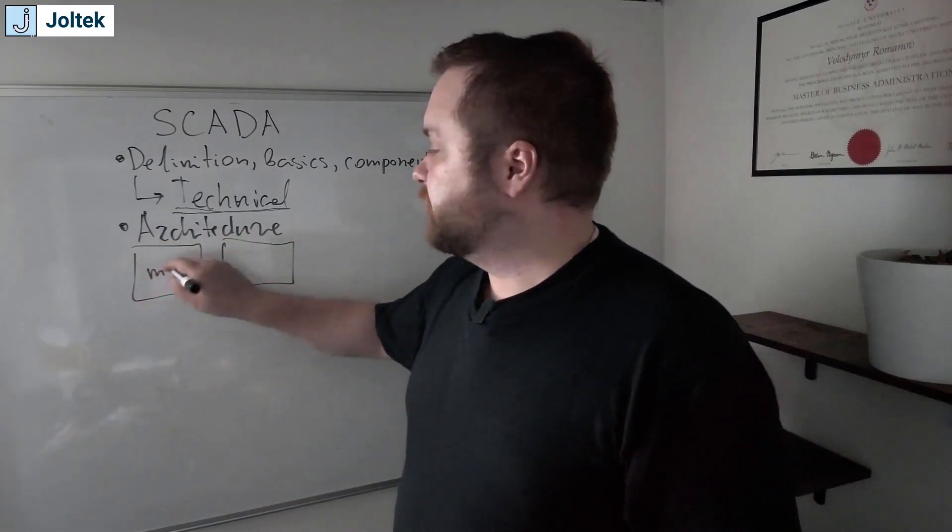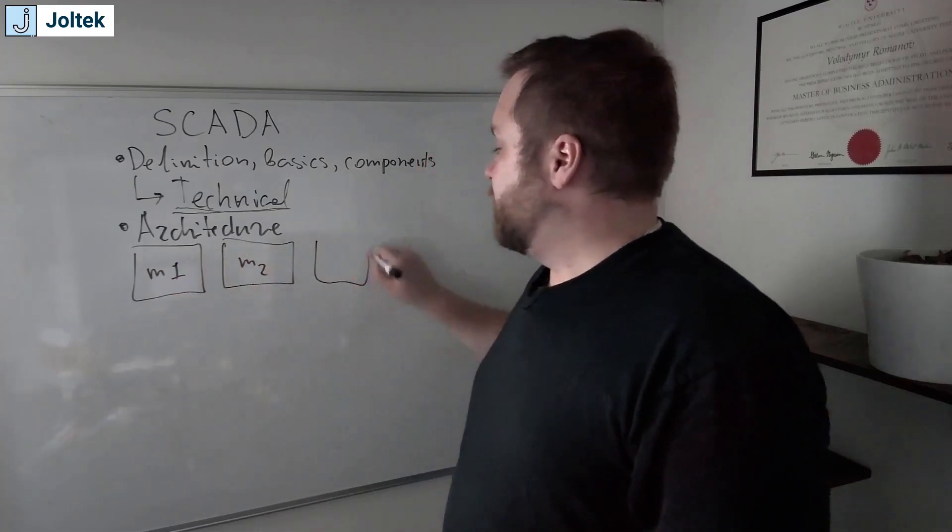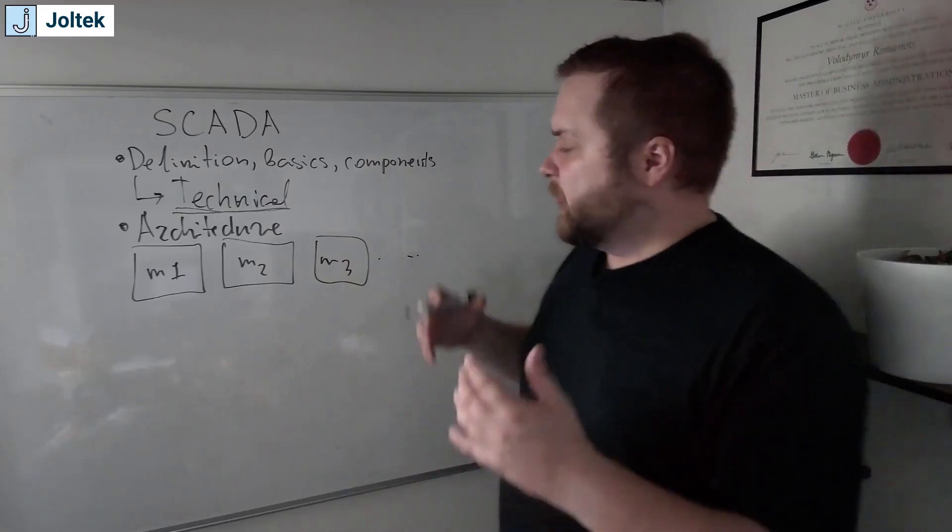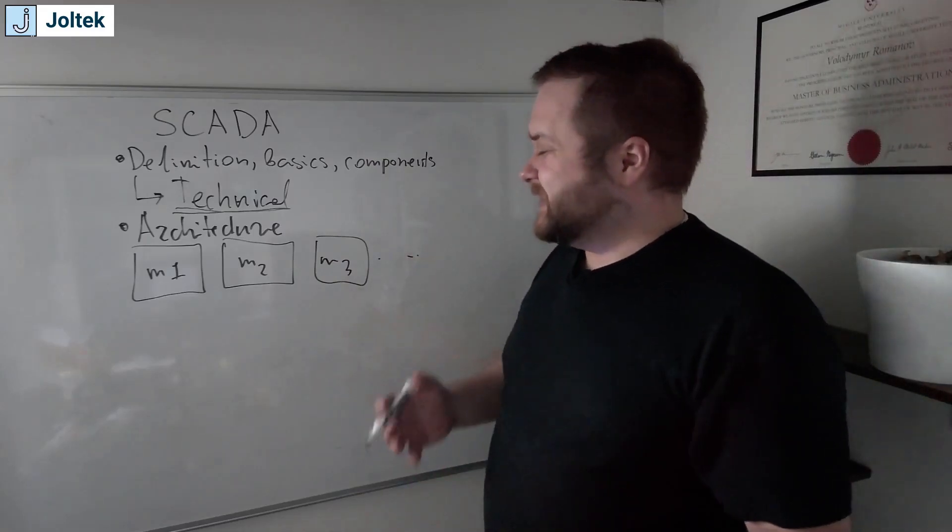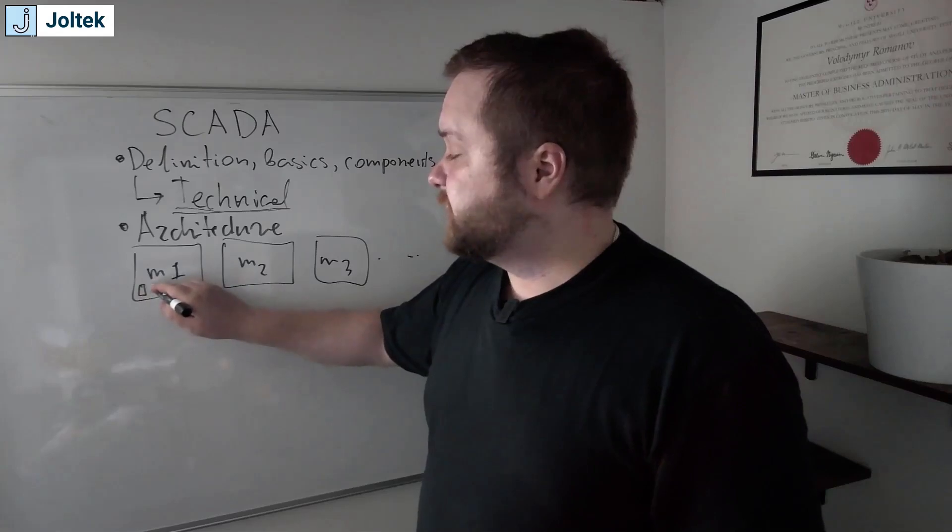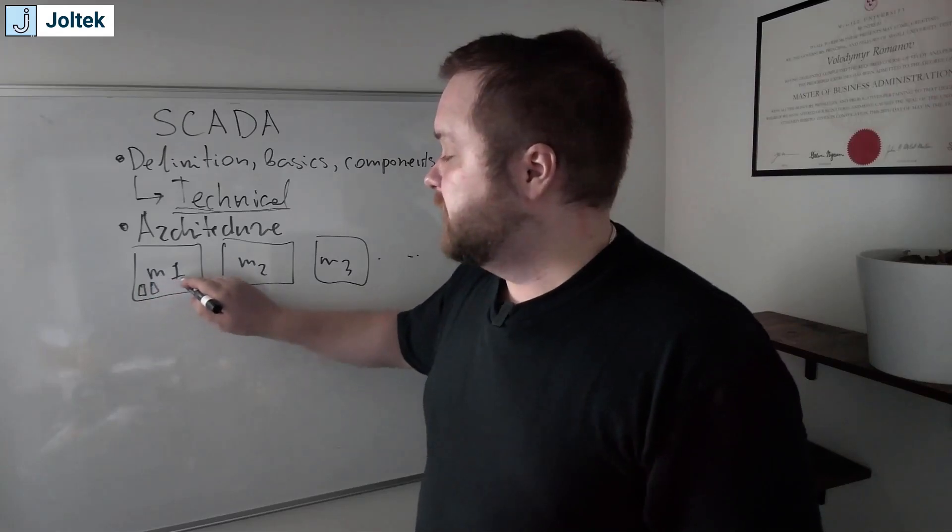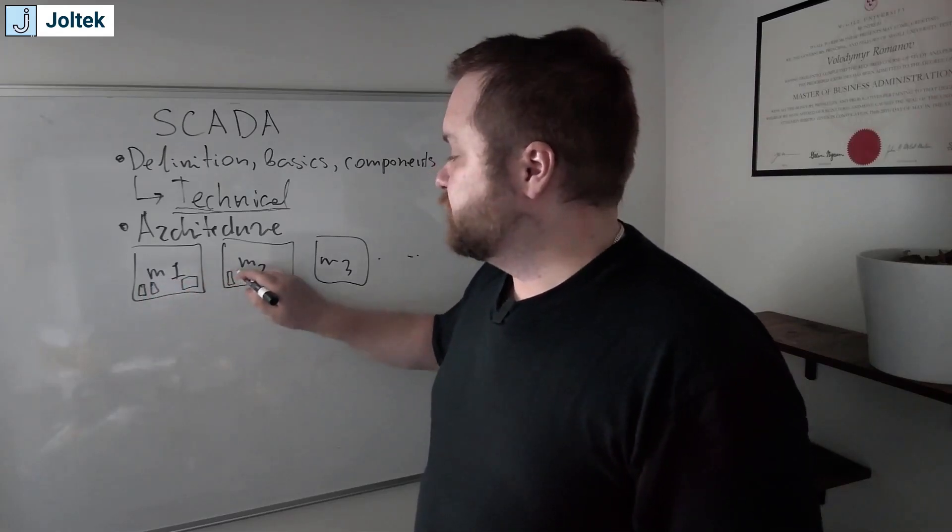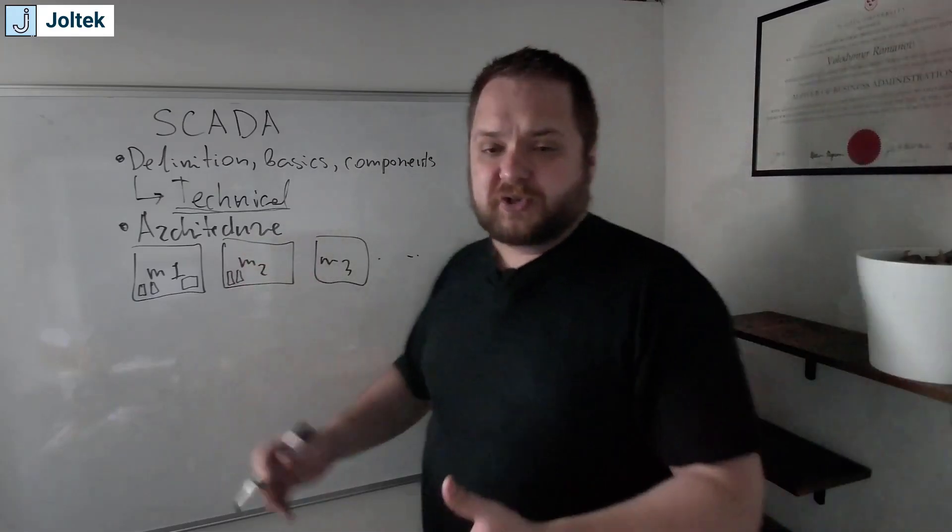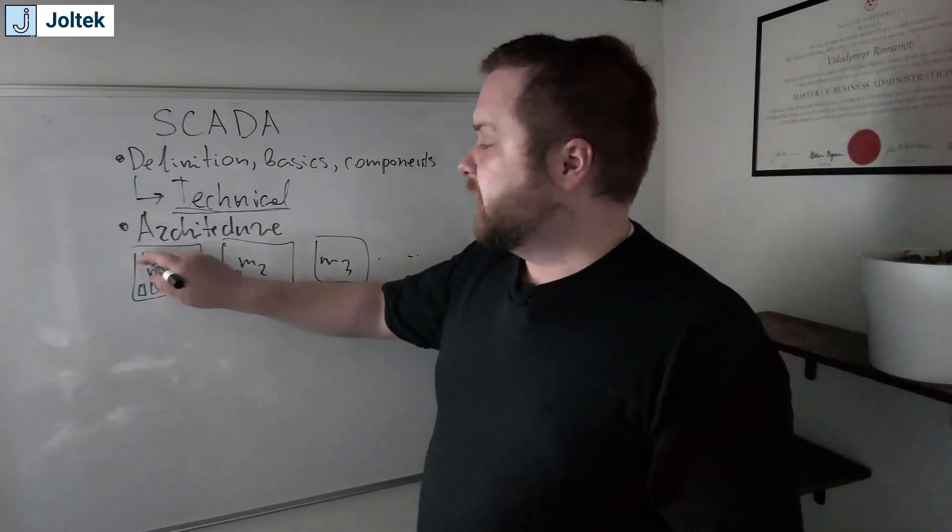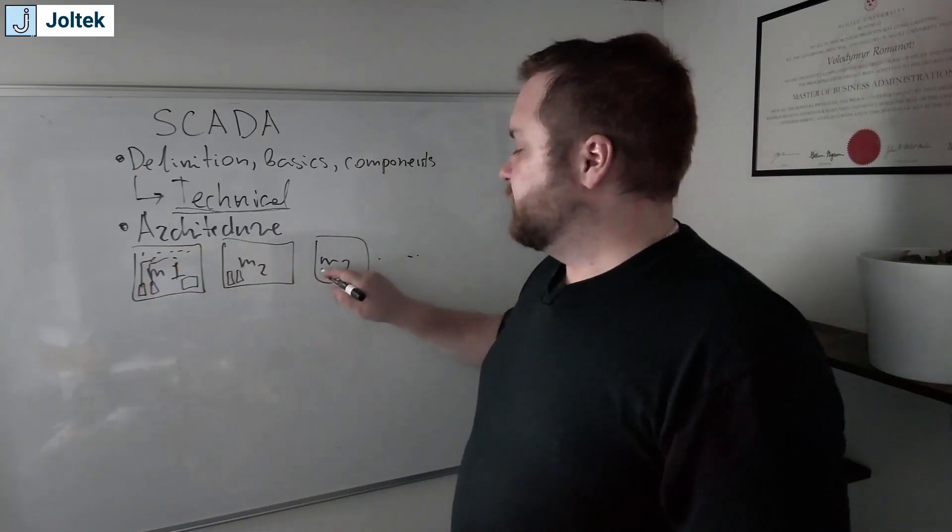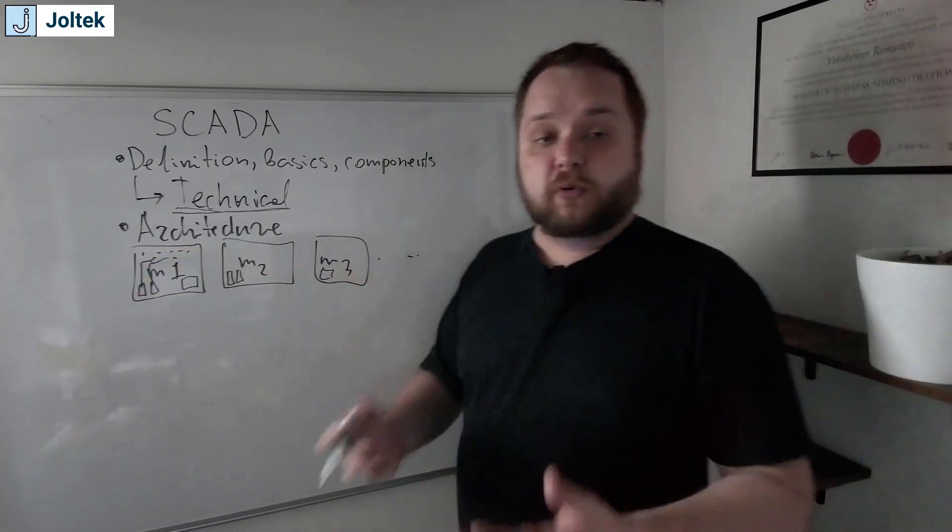So here you have machine one. Here you have machine two. Here you have machine three. So on and so forth. So you have multiple machines. It could be discrete. It could be process. It doesn't necessarily matter what they are. And each one of these machines, like I mentioned before, it has a PLC. It can even have multiple PLCs. It also has an HMI. So there's going to be controllers that do something within that machine. It could be motors. It could be sensors. It could be drives. So there's going to be a lot of different components, field devices, and field devices here inside of our machine. Same goes for machine three, machine four, so on and so forth.